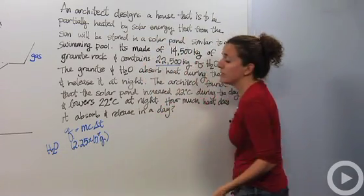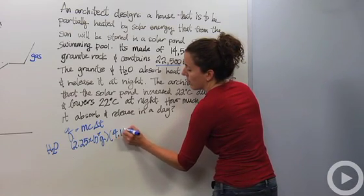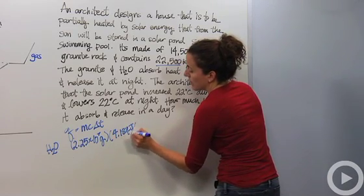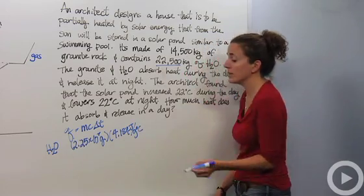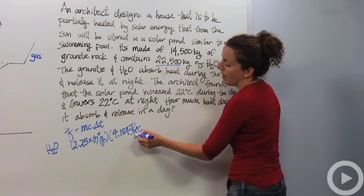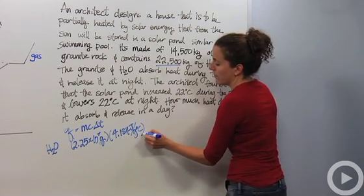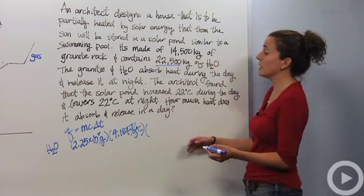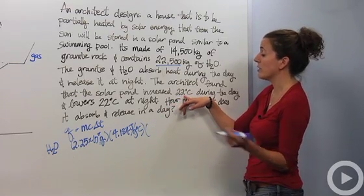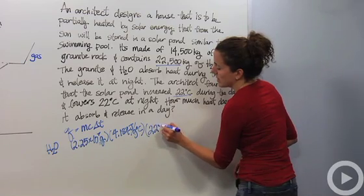The C of water or the specific heat of water is 4.184 joules per gram degree Celsius. The reason I want this in grams is because my unit for specific heat has grams in it. I want to make sure these units are the same. We know the temperature increases and decreases 22 degrees Celsius. So our change in temperature is 22 degrees Celsius.